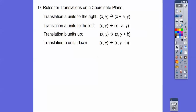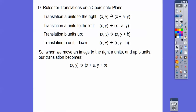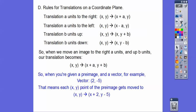So here are the rules for translations on a coordinate plane. If we move to the right, that is plus A with the X. If we move to the left, that is minus A. Left and right is X movement. If we go up and down, that is Y movement. If we go up, we add to Y. If we go down, we subtract from Y. So when we move an image to the right A units and up B units, that takes the pre-image point (X, Y) and moves it to (X plus A, Y plus B). If it goes to the left, it's X minus A. If it goes down, it's Y minus B. So when you're given a vector, for example the vector (2, negative 5), each (X, Y) point will add 2 to X and subtract 5 from Y.